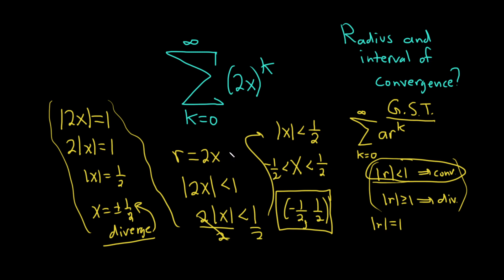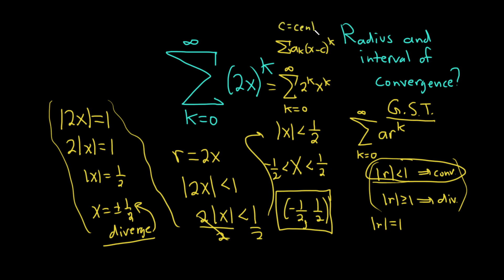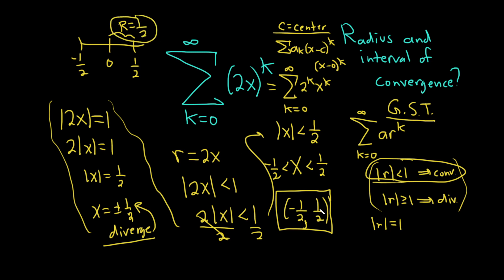As for the radius of convergence, we can think of this as the sum from k equals 0 to infinity of 2 to the k times x to the k. The generic form of a power series is a sub k times x minus c to the k, where c is the center. In this case the center is 0, and our interval is from negative 1 half to 1 half, so the radius is 1 half. A shorter way: just take the length of the interval, which is 1, and divide by 2 to get 1 half.